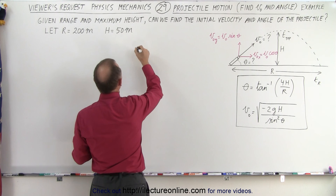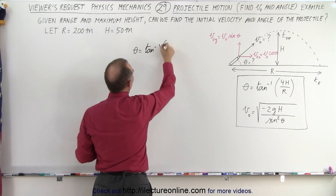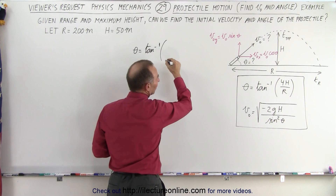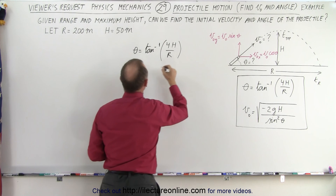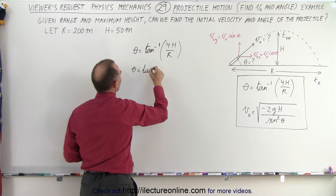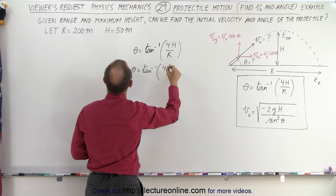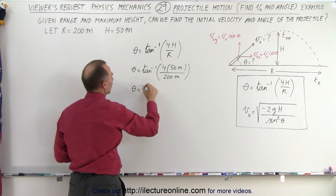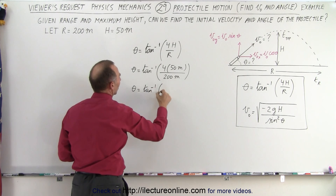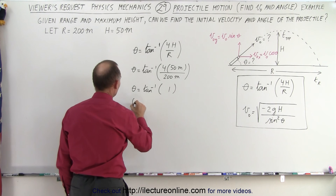First, the angle. Theta is equal to the inverse tangent of four times the height divided by the range. So in this case theta is equal to the inverse tangent of four times the height, which is 50 meters, divided by the range which is 200 meters. That gives us the inverse tangent of one, and of course the inverse tangent of one means the angle is 45 degrees.